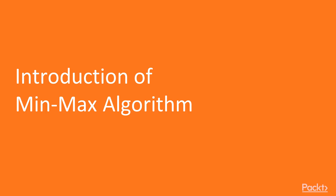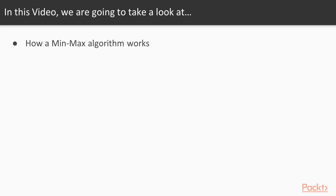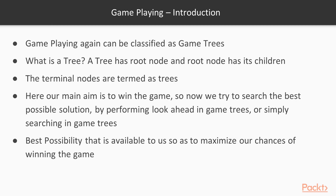We'll discuss an algorithm called the minmax algorithm. To understand it, we need to know what game trees are. A game tree is a tree structure with a root node, children nodes each subdivided into further children, forming a tree. The last terminal nodes are called leaves. Our main aim is to win the game.